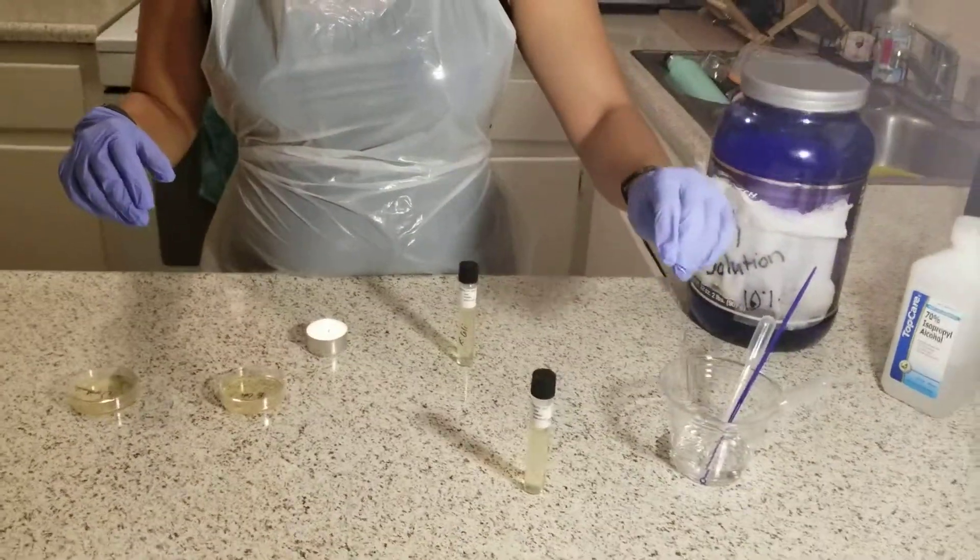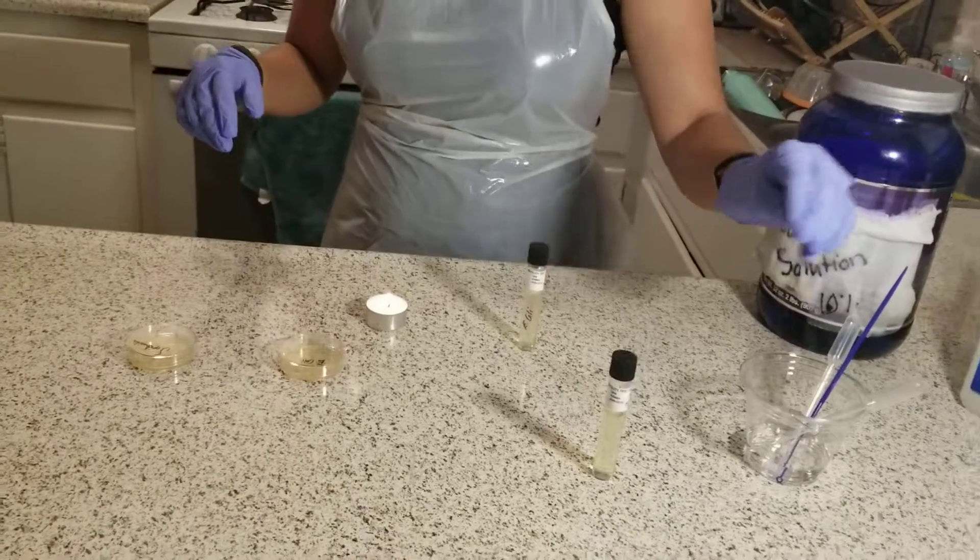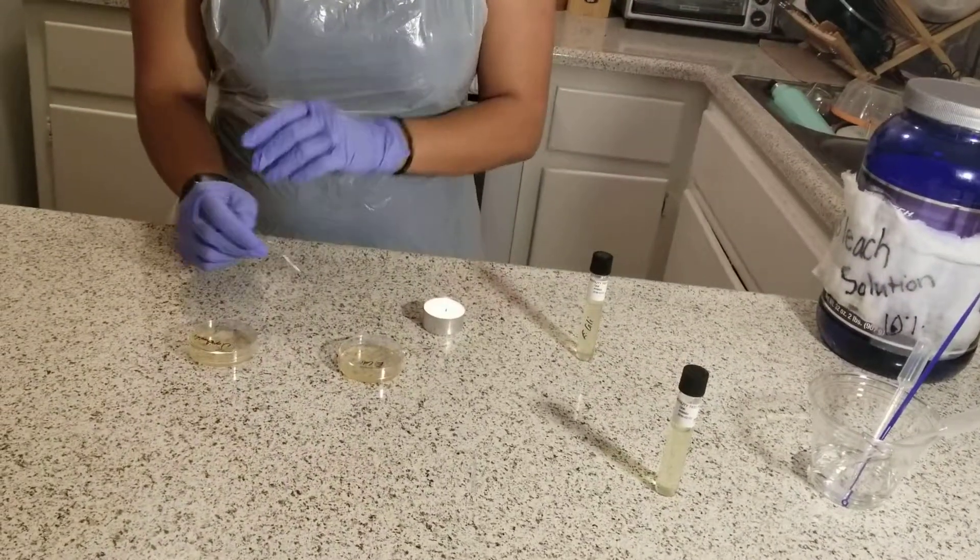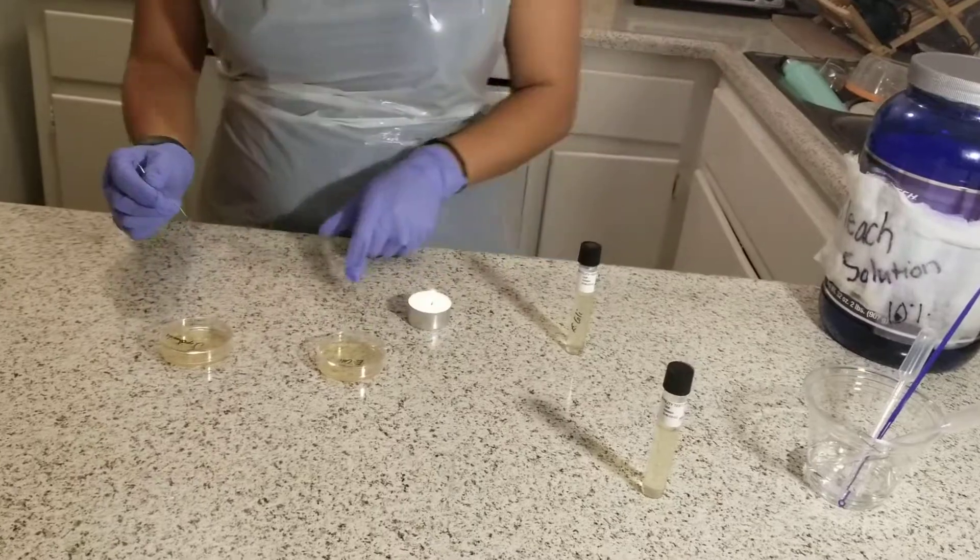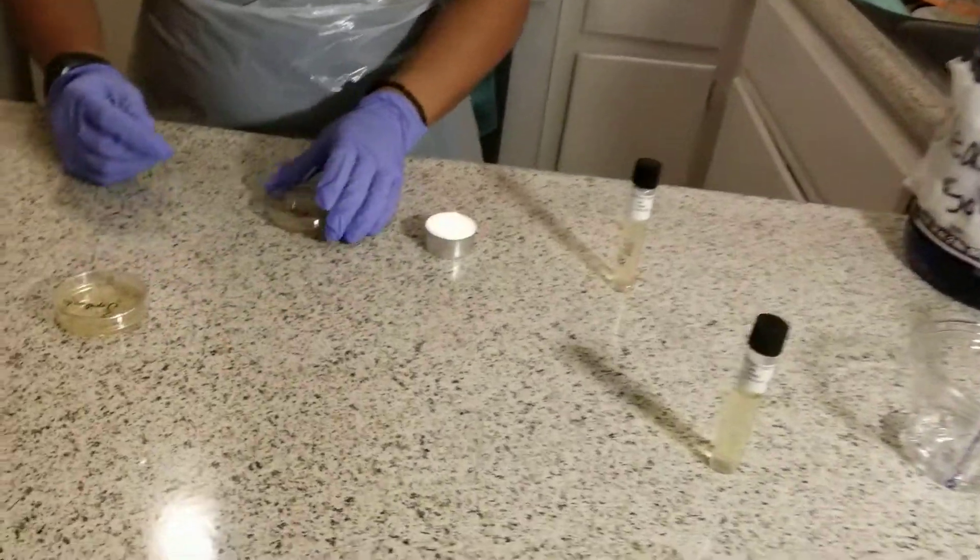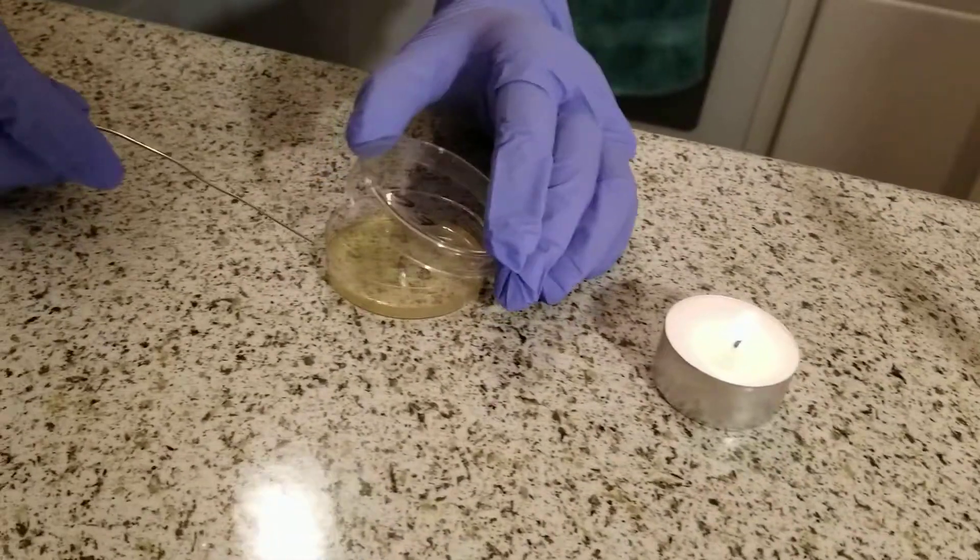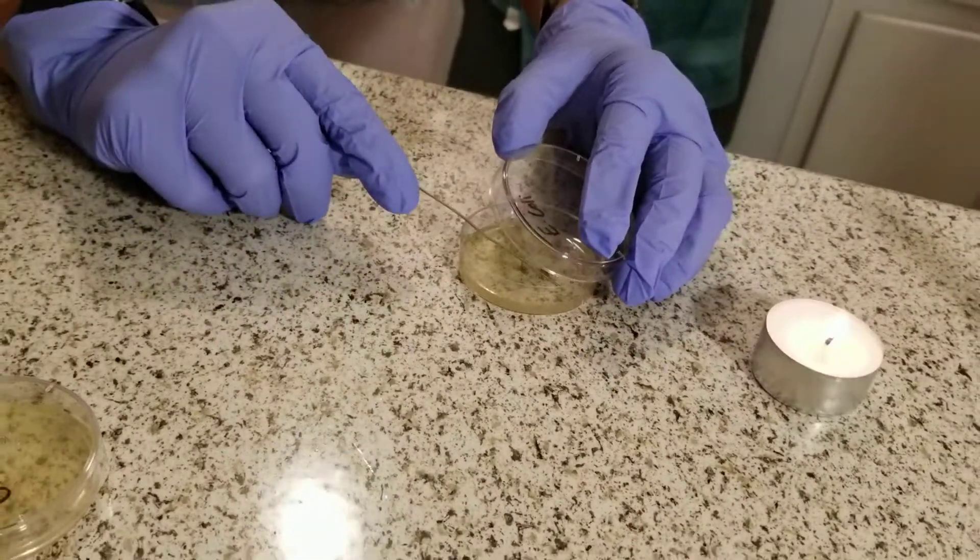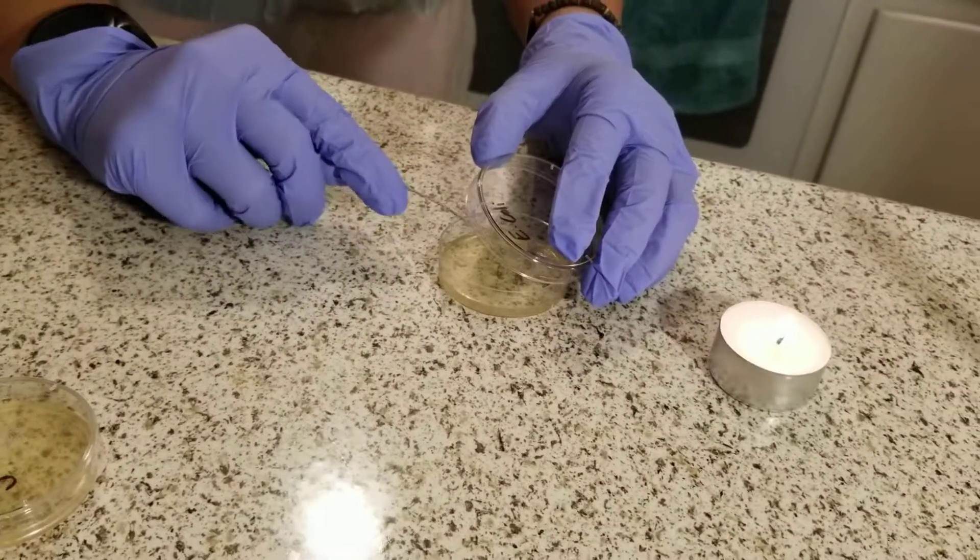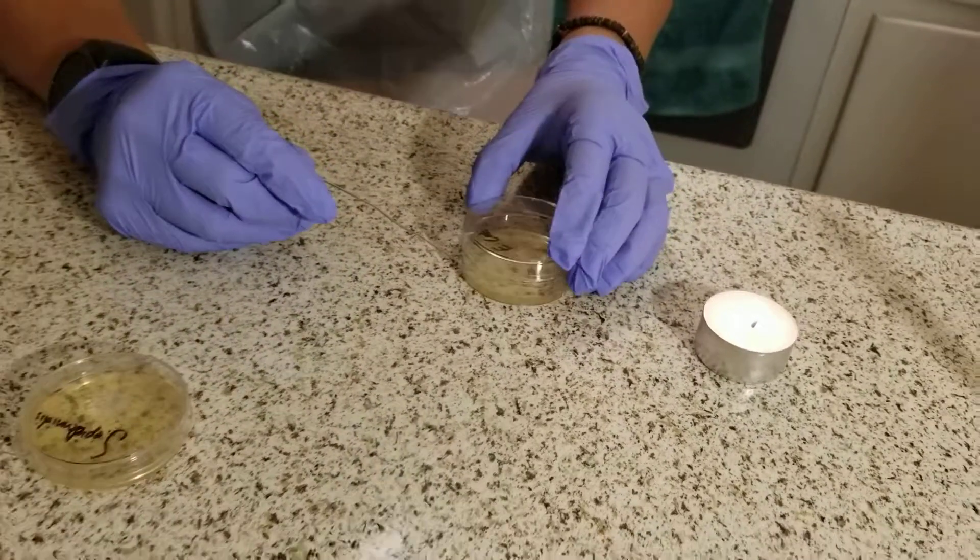Then I'll use my paper clip and put it into my E. coli plate. I'm going to swipe it across the surface to collect colonies, rubbing it against the surface of my agar plate.